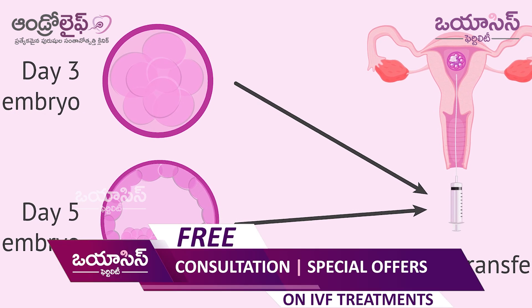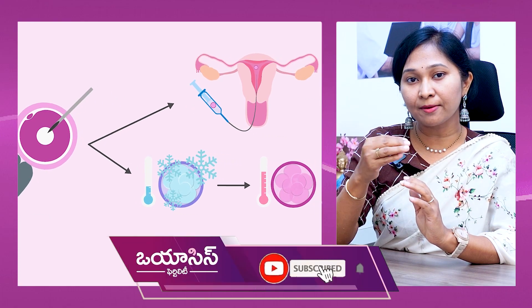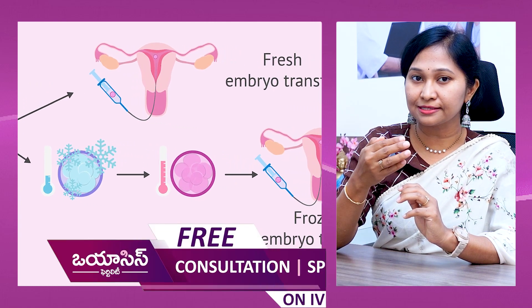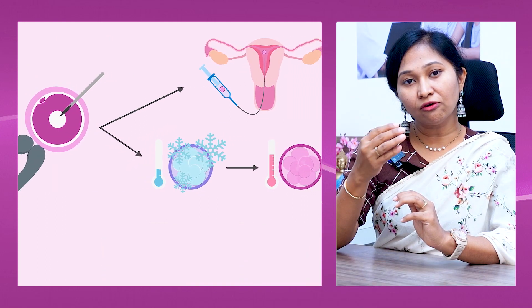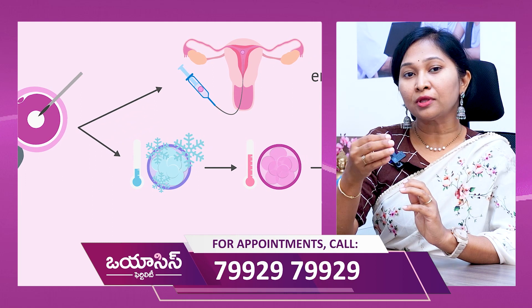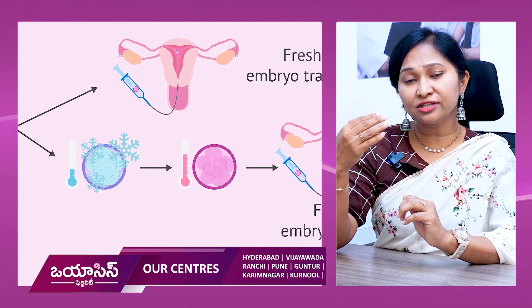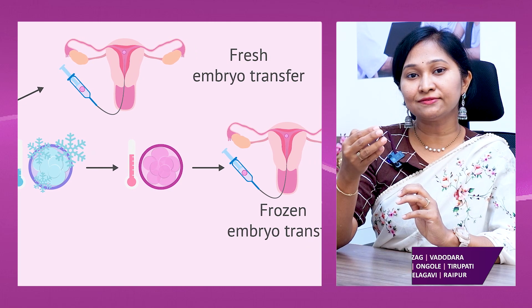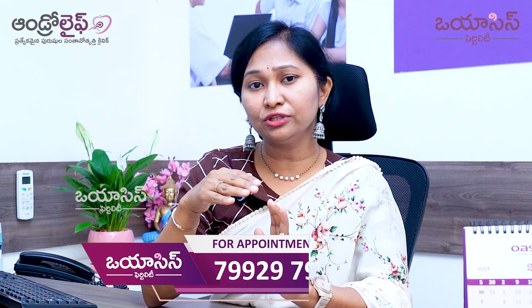The second consideration is fresh transfer versus frozen transfer. In a fresh transfer, we pick up the embryo and transfer it immediately, within 4 to 6 days. In a frozen transfer, once the embryo is formed, it is cryopreserved, and at a later date, after the endometrium is prepared, we will transfer.